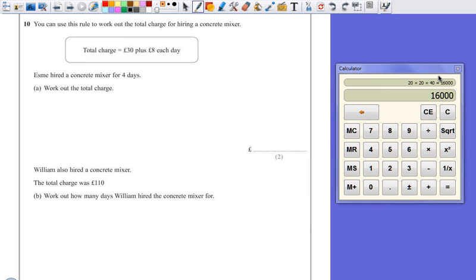Question 10. You can use this rule to work out the total charge for hiring a concrete mixer. So the total charge is £30 plus £8 for each day.